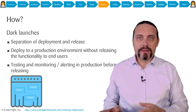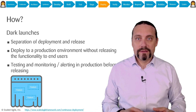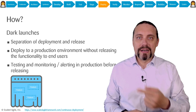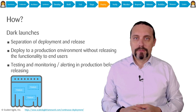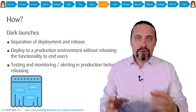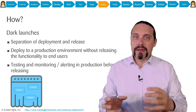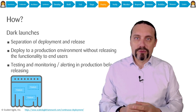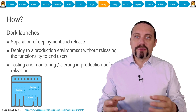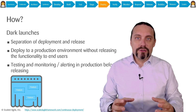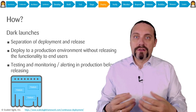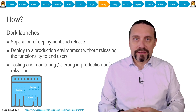Separating deployment from release and having feature toggles enables us to have dark launches. Dark launches enable us to already test monitoring and alerting in the production environment. We are also able to see how the newly deployed code acts in production with real production data.